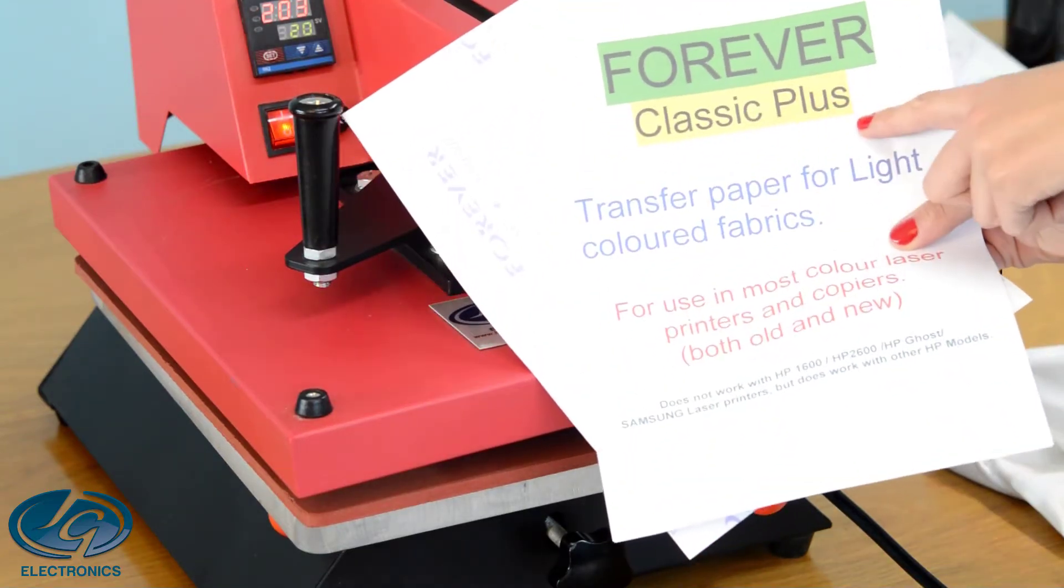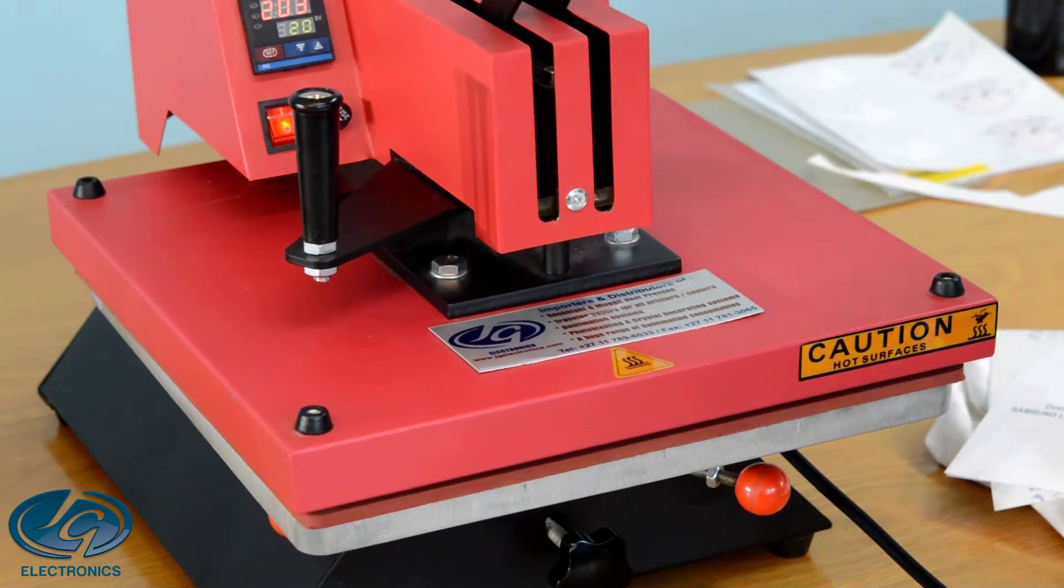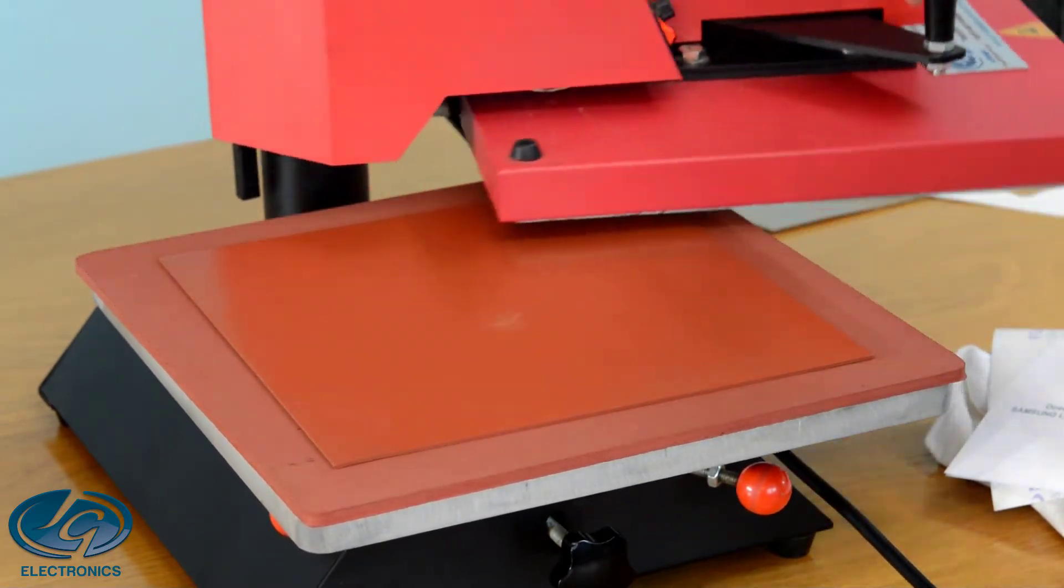This is our Forever Classic Plus paper for your white cotton t-shirts. Use heavy pressure at 200 degrees for 20 seconds. Set your press.